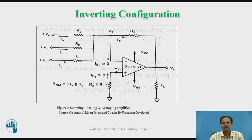Since the non-inverting input of the operational amplifier is connected to ground, the voltage at non-inverting input V-1 is equal to zero. The op-amp always tries to equalize voltage at non-inverting and inverting inputs. As voltage at V-1 is zero volts, the voltage at inverting input V-2 is also zero volts. It acts as a virtual ground by the concept of virtual ground — the inverting input is virtually grounded.